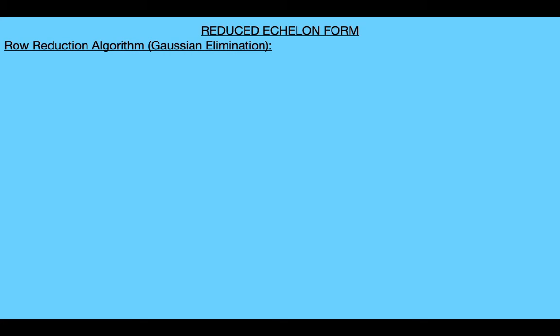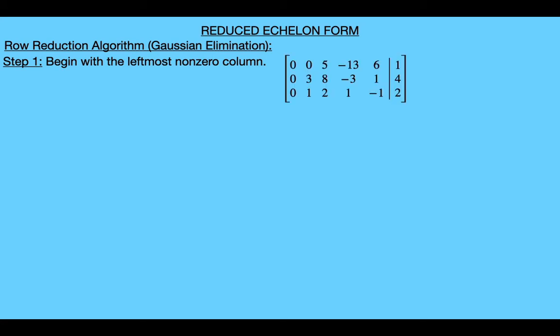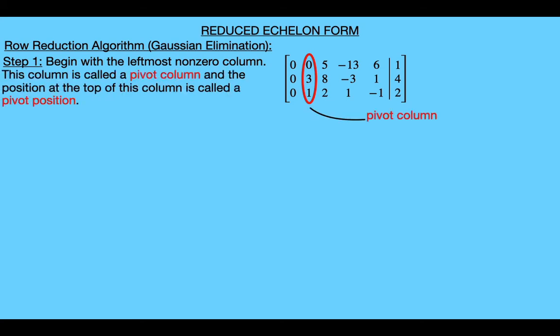Suppose we start with an arbitrary matrix. Step one of the algorithm says to begin with the leftmost non-zero column in the matrix. For example, if we have a matrix where the leftmost non-zero column is the second column, we call that column a pivot column. The position at the top of this column is called a pivot position — in our example that's the first row of the second column.